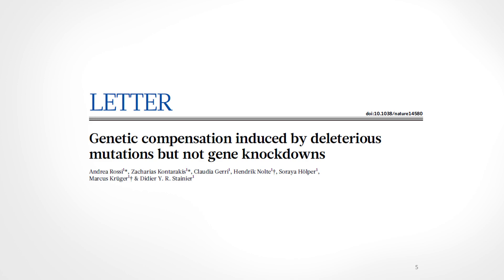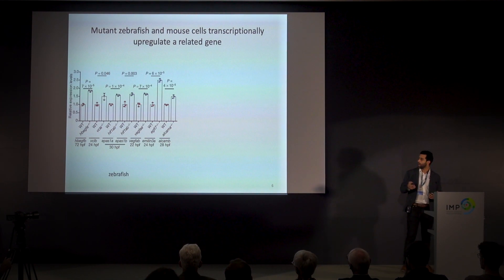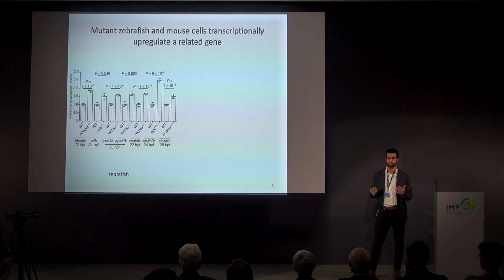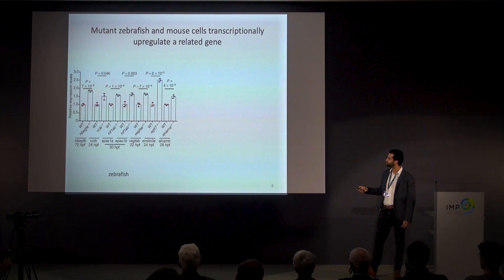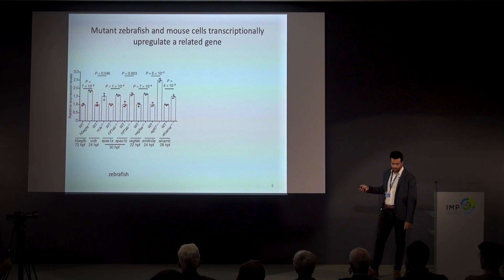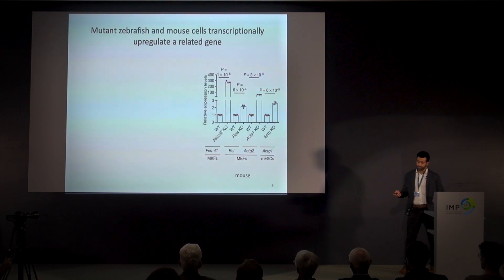This led them to conclude that genetic compensation can be induced by deleterious mutations, but not gene knockdowns. The underlying mechanism was yet unknown, and I was interested to figure it out. I started by screening many mutants in the lab — zebrafish and mouse — and observed that, at least in zebrafish where the genome is duplicated, mutations of a paralog often lead to upregulation of the other paralog. For example, HBGF-A mutants upregulate HBGF-B, Winklin-A mutants upregulate Winklin-B, and we found the same in mice, where FIRM2 knockouts lead to upregulation of FIRM1, and beta-actin knockouts lead to upregulation of gamma-actin.